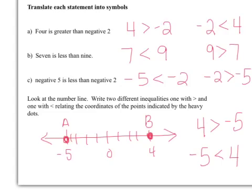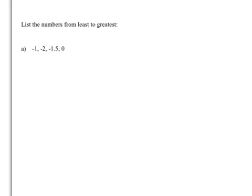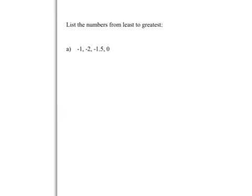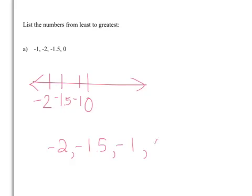A couple more things with numbers. Putting things in order from least to greatest. You have to remember on a number line, the bigger the number, the more negative. So negative two is way over here, and it would be my smallest number. Then negative 1.5, then negative one. So in order from least to greatest, we have negative two, negative 1.5, negative one, and zero.